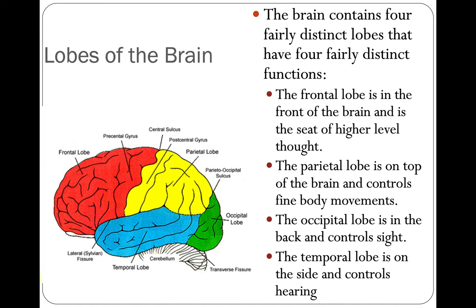The brain contains four fairly distinct lobes with four fairly distinct functions. The frontal lobe is in the front of the brain and is the seat of higher-level thought. The parietal lobe is on top of the brain and controls fine body movements. The occipital lobe is in the back and has to do with eyesight. The temporal lobe has to do with hearing. So: red is frontal lobe, yellow is parietal lobe, green is occipital lobe, blue is temporal lobe, and the cerebellum is down here at the back.